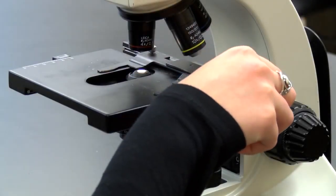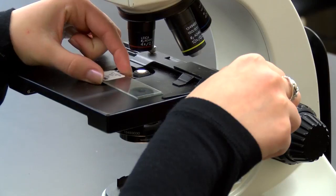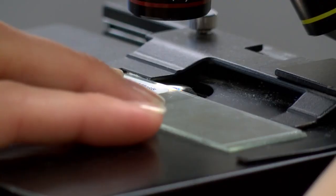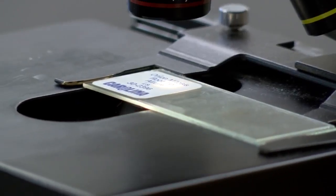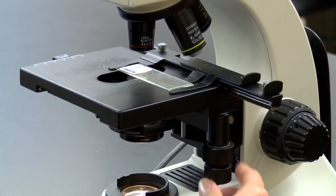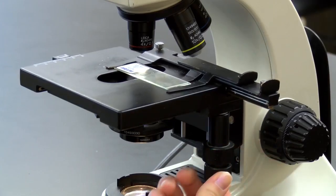Open the clip on the stage with one hand and slide a microscope slide to the back of the stage. Be sure the slide doesn't go under the clips that hold it in place. Use the knobs on the lower right side of the stage to center the specimen over the condenser lens.